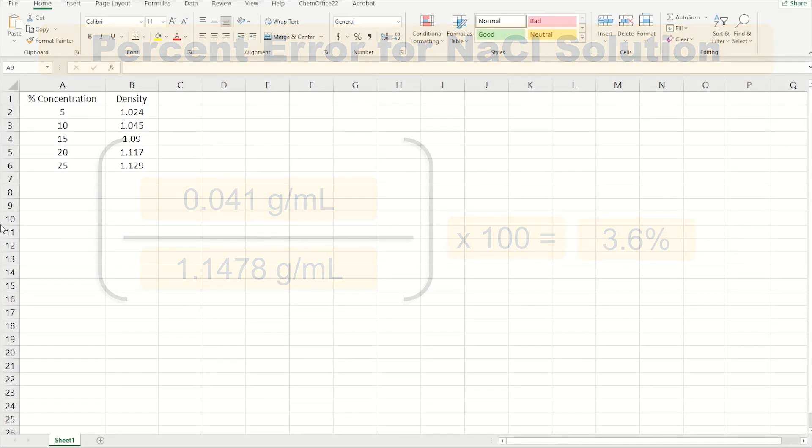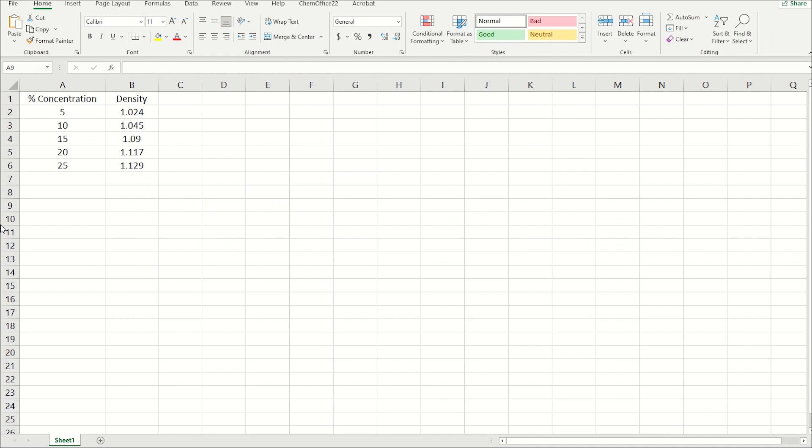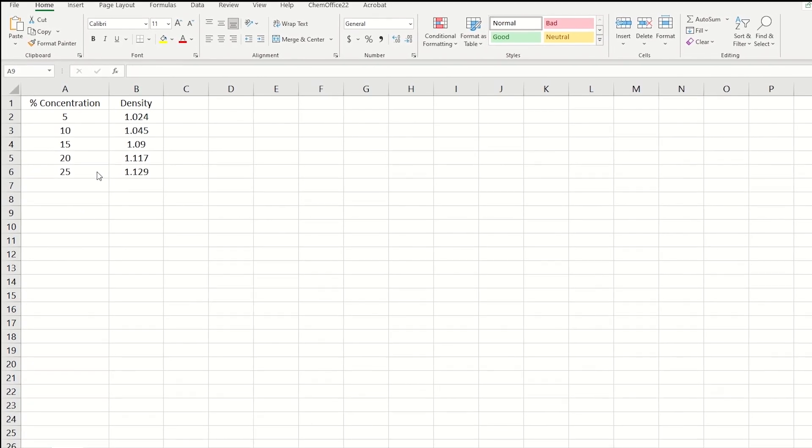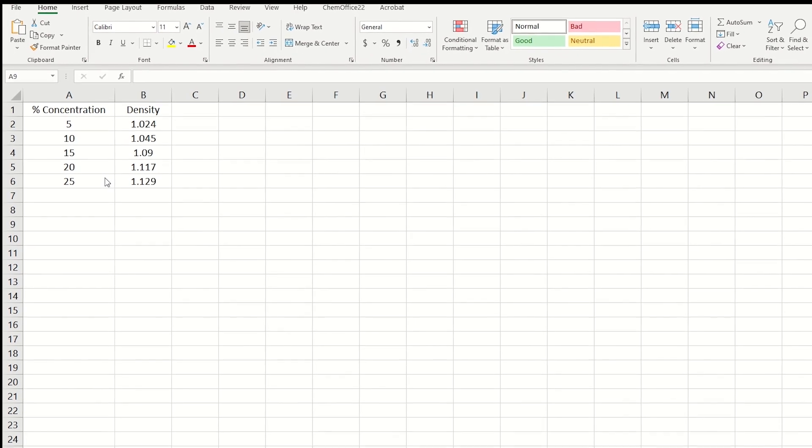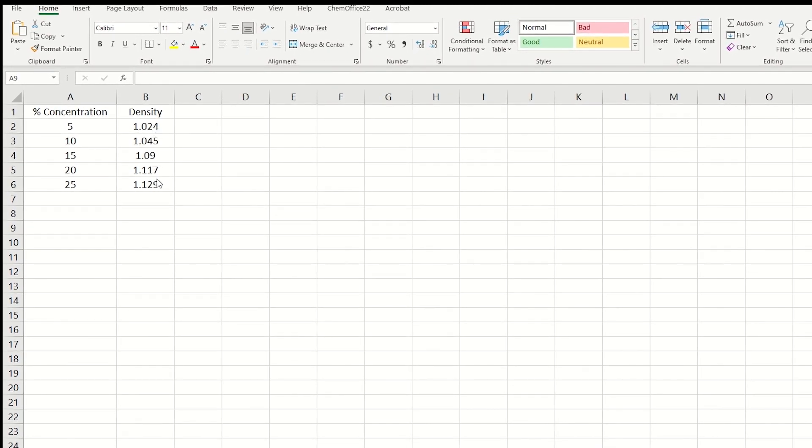Let's close our density lab by learning to create a calibration curve of known sodium chloride solutions. Here is sample data from one of my labs where students determine the density of 5, 10, 15, 20, and 25% sodium chloride solutions. The concentrations are in the left column, and the densities are in the right column.